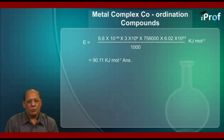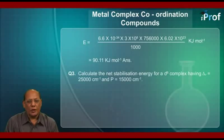Next is question number 3. Calculate the net stabilization energy for a d⁶ complex having Δₒ equal to 25,000 cm⁻¹ and P equal to 15,000 cm⁻¹. Its solution is: